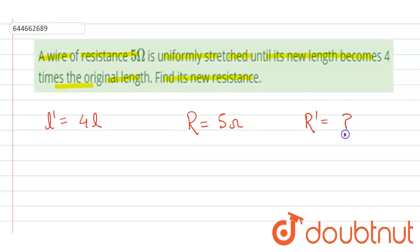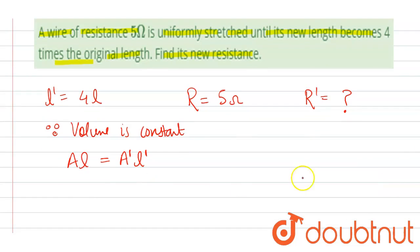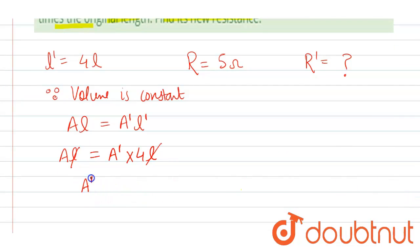Now since volume is constant during stretching, this means that area into length will be equal to new area into new length. So that implies A × l will be equal to A' × 4l. Now cancelling l with l here, what we get is A' will be equal to A by 4.